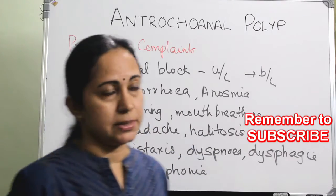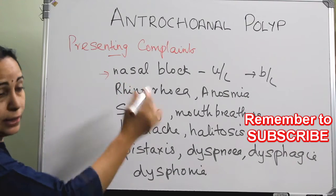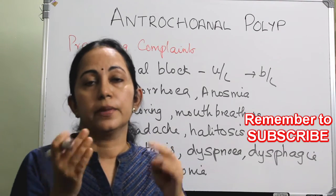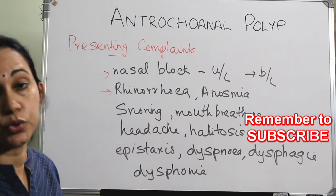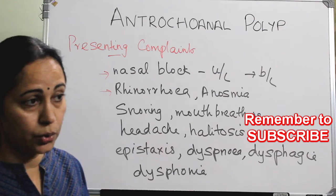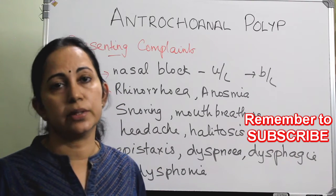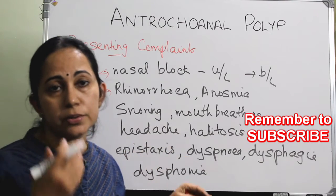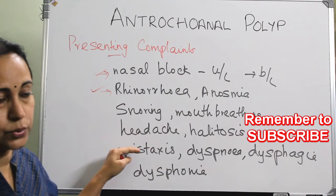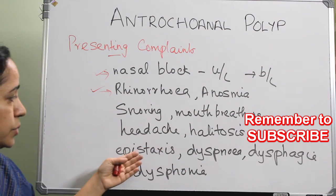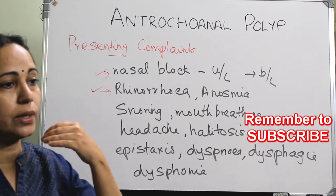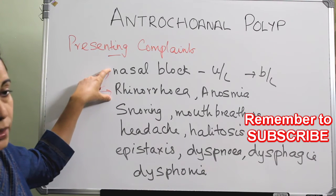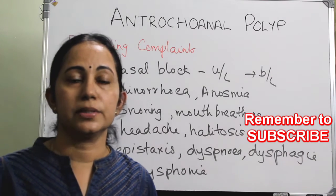The presenting complaints are similar to all other nasal masses. Mainly there is nasal block, initially unilateral and later bilateral as the mass obstructs the choana. There is rhinorrhea, usually purulent nasal discharge — not watery since most cases are not associated with allergy. Additional complaints include anosmia, snoring and mouth breathing, headache if associated with sinusitis, halitosis, occasional epistaxis, and because it blocks the posterior space, dyspnea, dysphagia, and dysphonia.